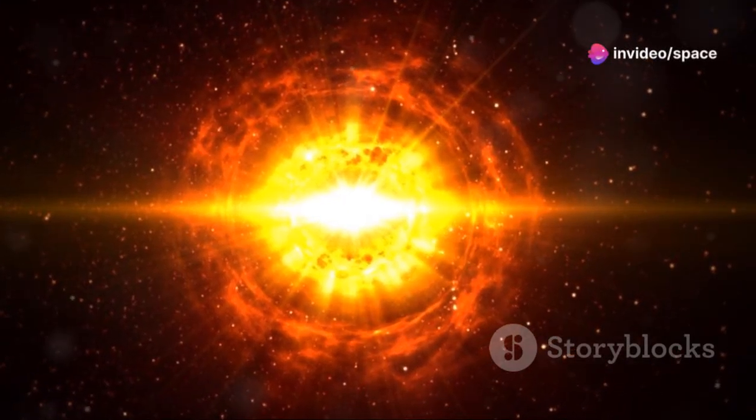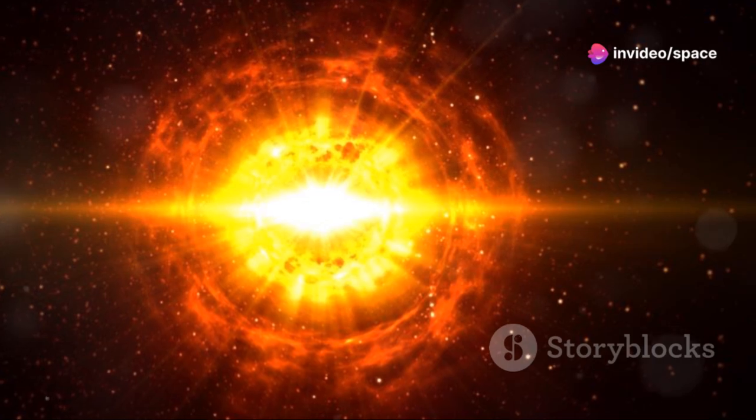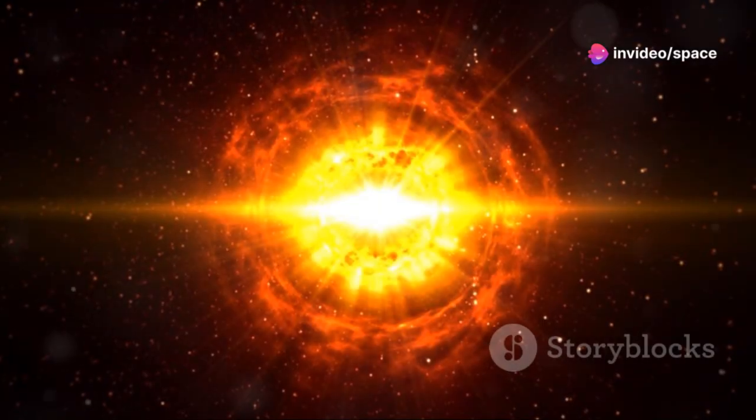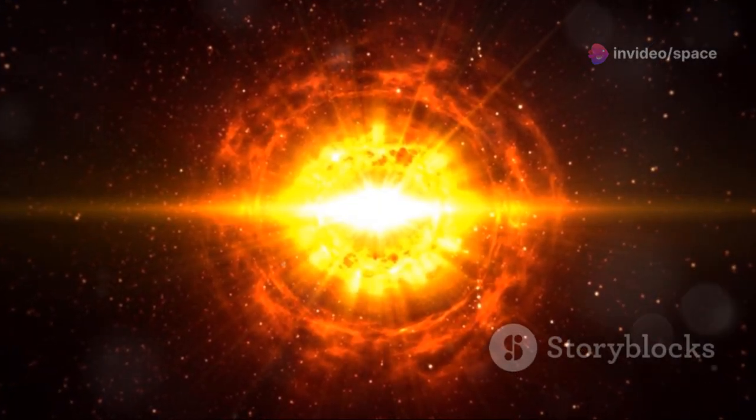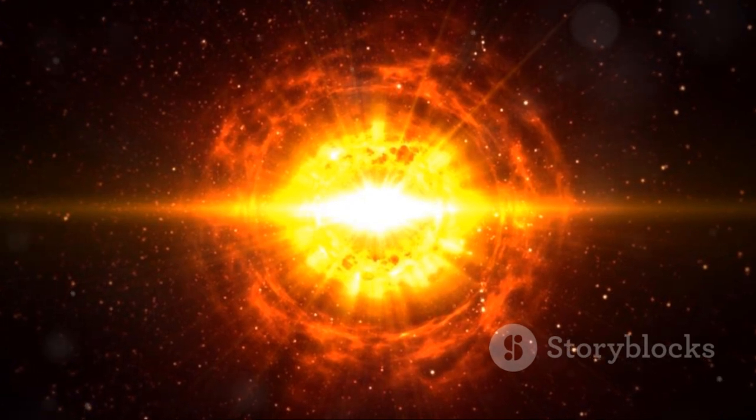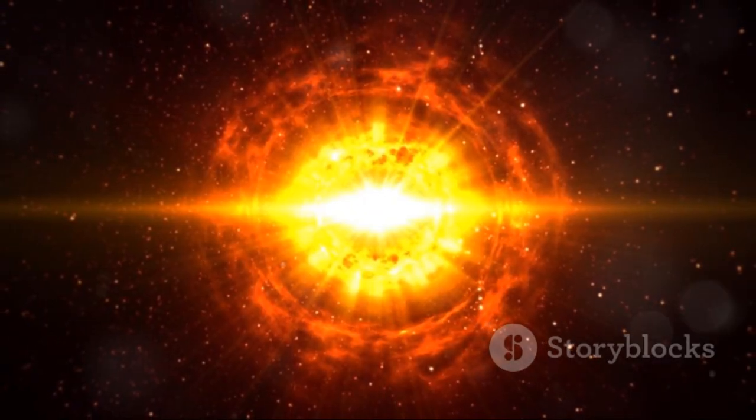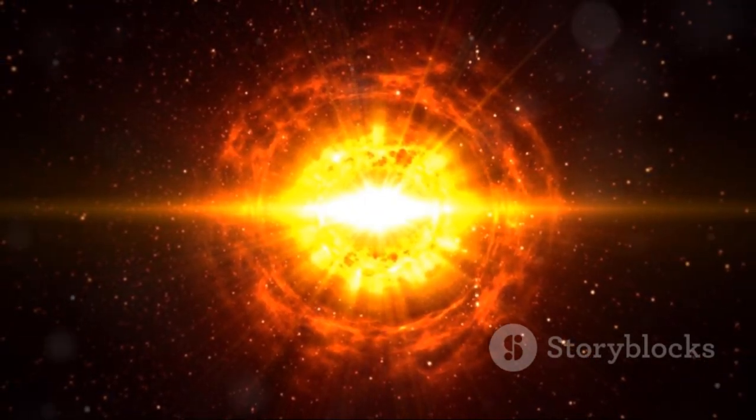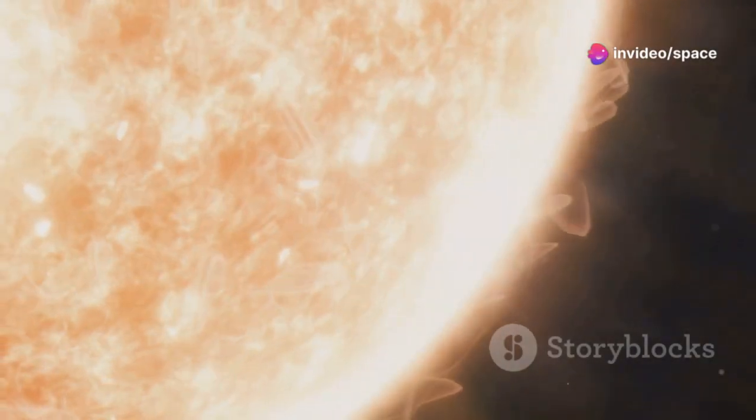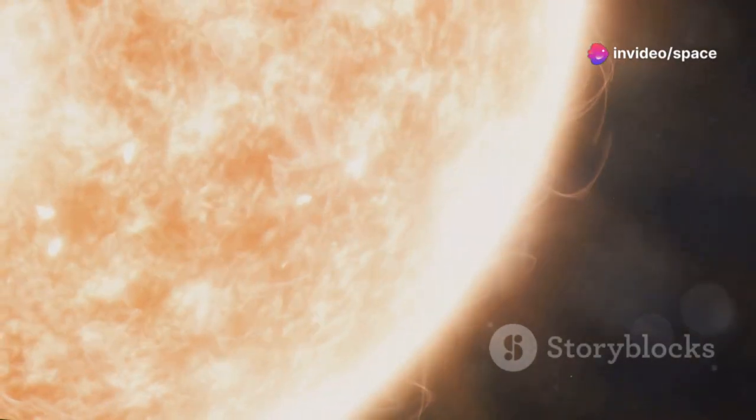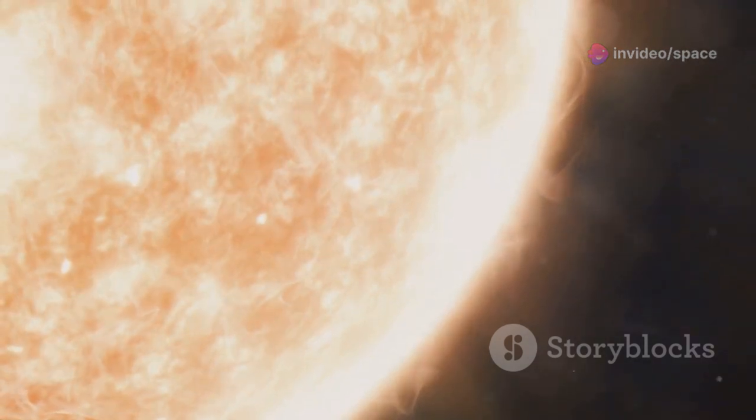Betelgeuse is a red supergiant, one of the largest star types in the universe. Its diameter is about 1,400 times that of our sun. If placed at the center of our solar system, Betelgeuse would extend beyond Jupiter's orbit. This star is nearing the end of its life, with a turbulent surface marked by massive solar flares and stellar winds.